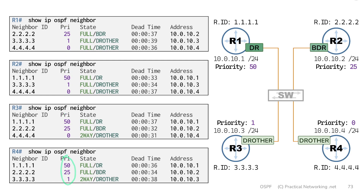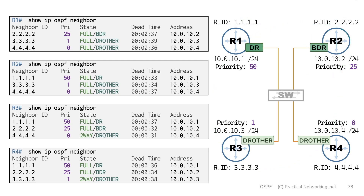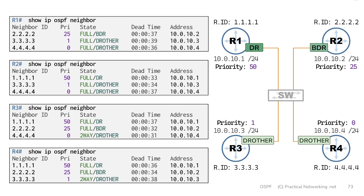Setting the priority numbers this way now creates deterministic DR and BDR election — we know for a fact router 1 will become the DR and router 2 will become the BDR if all four routers come up at the exact same time. But keep in mind that the DR and BDR election does not preempt. If router 3 were to come up first before router 1 and router 2, then router 3 would become the DR. So a good rule of thumb is to set the priority higher than the default for the router you want as DR or BDR, and set priority 0 for any router you explicitly don't want to be the DR or BDR.